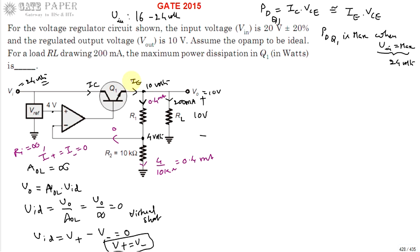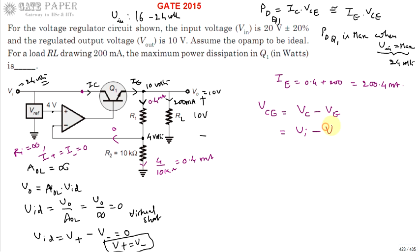The emitter current Ie is the sum of those two currents: Ie = 0.4 mA + 200 mA = 200.4 milliamperes. For Vce, it equals the collector voltage minus the emitter voltage. The collector voltage equals Vi (directly connected to the collector node), and the emitter voltage equals Vo (connected to the output node). For maximum power dissipation, Vi = 24 V and Vo = 10 V.